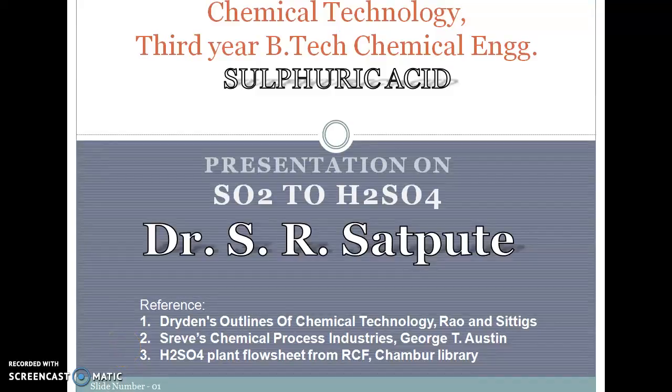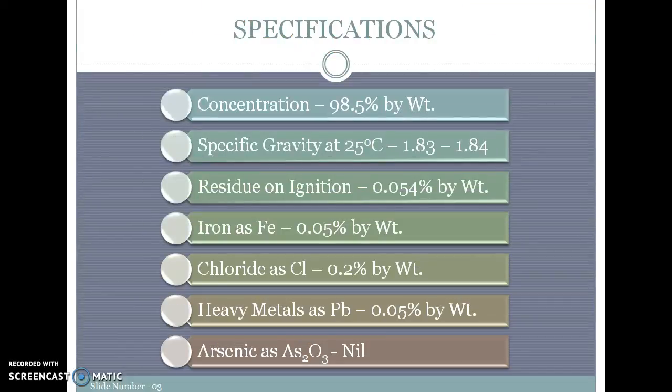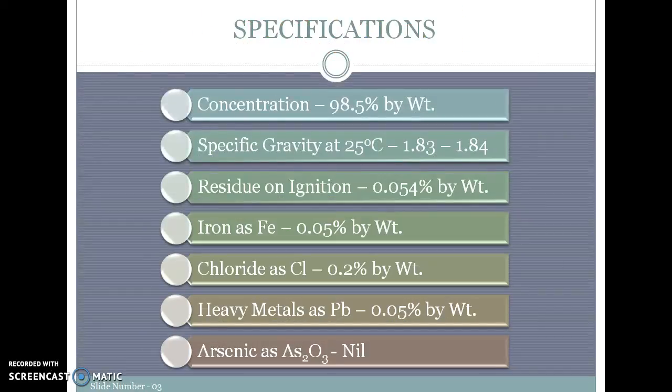Hi, we are continuing with sulfuric acid production for third year B.Tech chemical engineering, part of chemical technology subject. In this second part, we are looking at SO2 going to H2SO4. Let's start looking at this. First, we looked at how to make SO2 from sulfur.